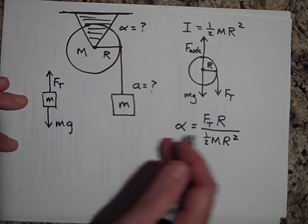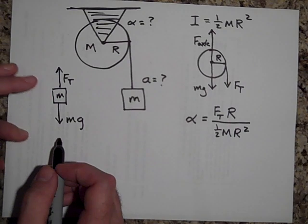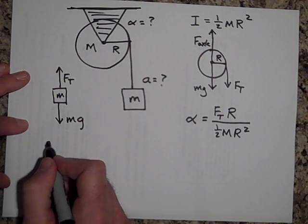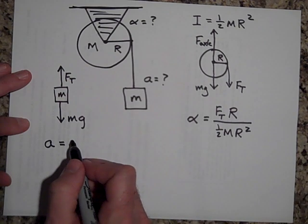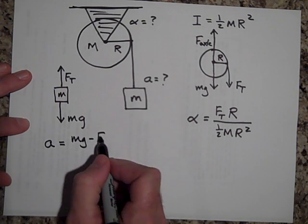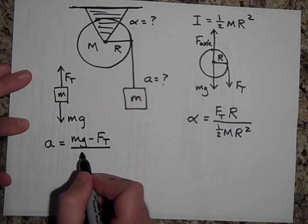Okay, come over here and we'll apply Newton's second law for linear motion here. So a equals the net force that would be mg minus FT all over m.